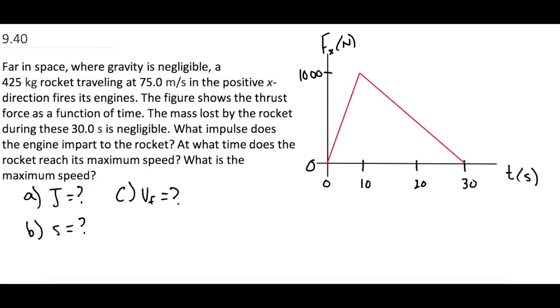Since we're dealing with impulse, let's write up this relationship. J equals the average force times time, which is also equal to the change in momentum.